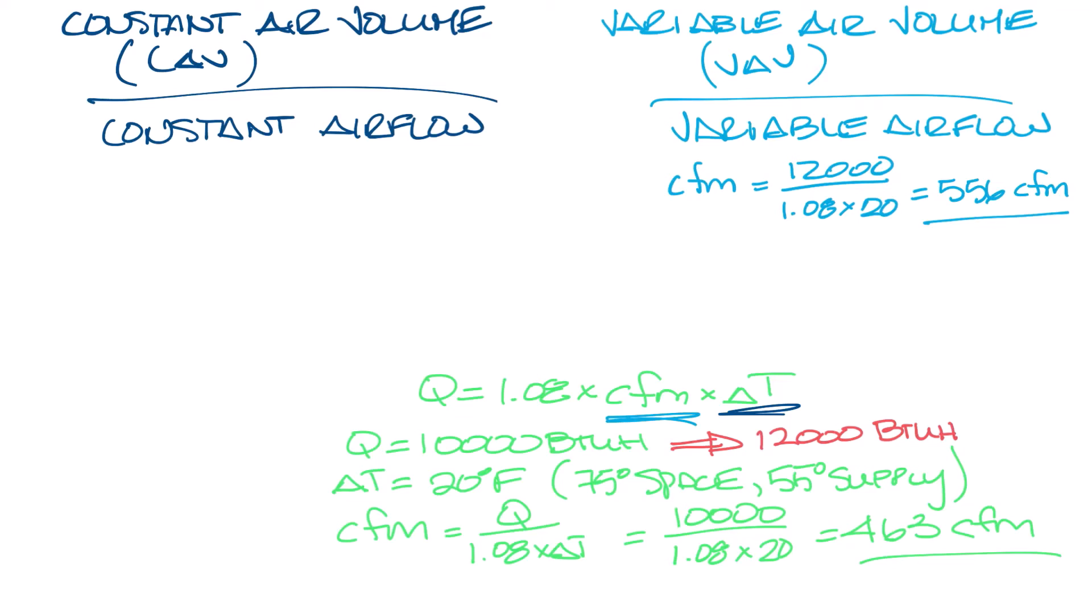So now let's look at the constant air volume system. In this system, the airflow is constant, so the CFM is still 463. So we need to calculate the delta T to handle the load, which is 12,000 divided by 1.08 times 463, and that equals 24 degrees Fahrenheit. So if we want to have a space that is 75 degrees, then a 24 degree delta T means our supply air is 51 degrees Fahrenheit.